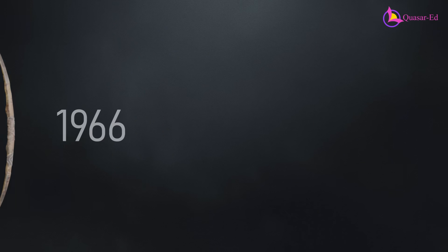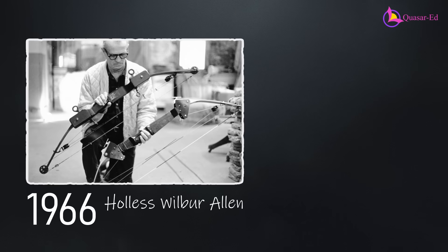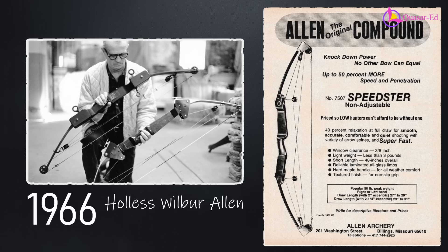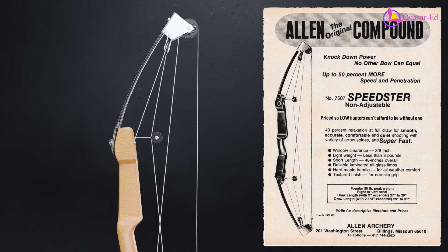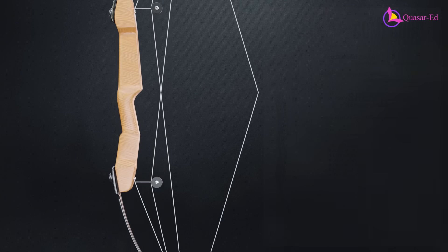But in 1966, Hollis Wilbur Allen revolutionized archery by inventing the compound bow. It uses a system of pulleys and steel cables to generate more power.